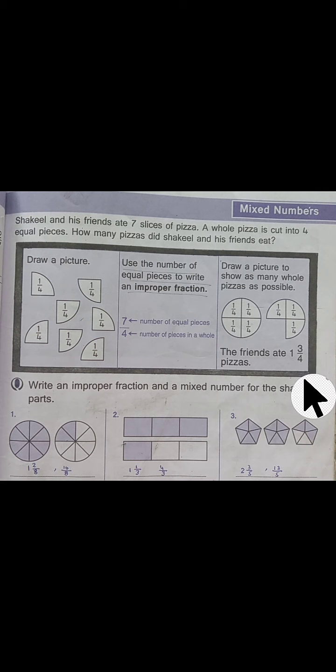7 by 4 is an improper fraction. Improper fraction is those whose numerator is bigger and denominator is smaller number. Now when we convert it into a mixed fraction, 7 by 4 becomes 1 whole 3 by 4.